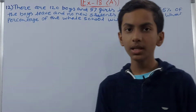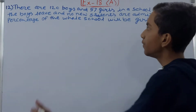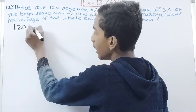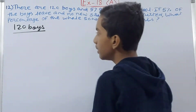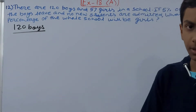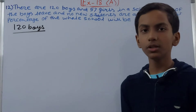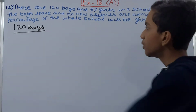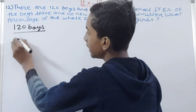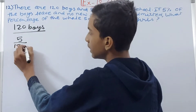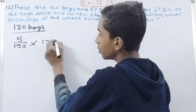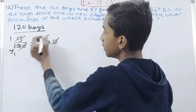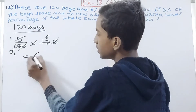So first of all, there are 120 boys, and out of these 120 boys, 5 percent leave. We have to find how many boys will be left after the 5 percent have left the school. So 5 upon 100 multiplied by 120 — cancel the zeros — that gives us 6 boys.